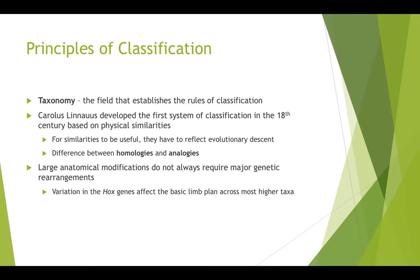Carolus Linnaeus offered a four-tier system. He included genus and species, which had already been in place from biologists before him, but he also added order and class. With this system of taxonomy, similarities must represent evolutionary descent to be useful. So we have this difference between what we call analogies and homologies. Analogies are similarities that evolve due to shared environmental features — what we also call convergent evolution or homoplasia.